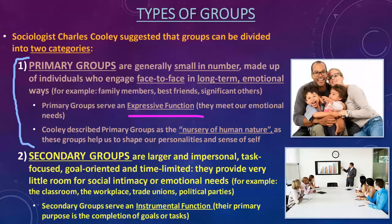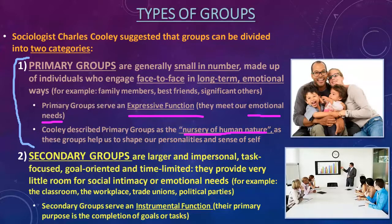Primary groups serve an expressive function — they meet our emotional needs. Cooley called primary groups 'the nursery of human nature,' because our family and peer groups are where our socialization really gets kicked into high gear from day one of our lives. This is where we're learning how to be human, how to be social, how to have a sense of self and understand our role in this big, complex society we've been born into.